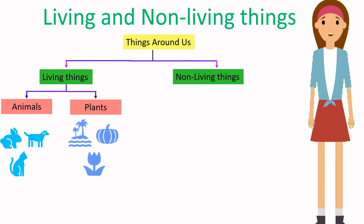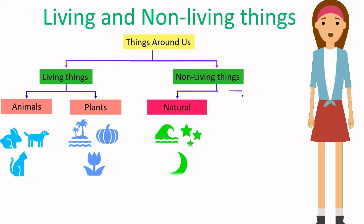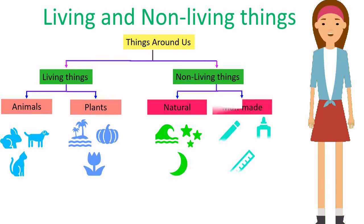Things that do not have life are non-living things. Non-living things can be natural, such as waves, stars and the moon. Some non-living things are man-made, such as pencil, glue bottle and scale.